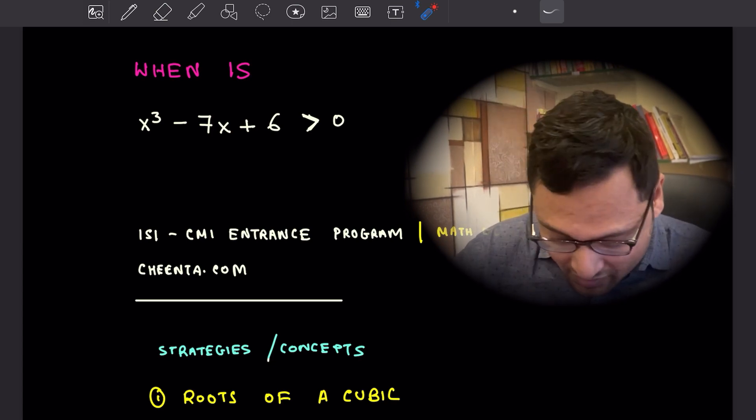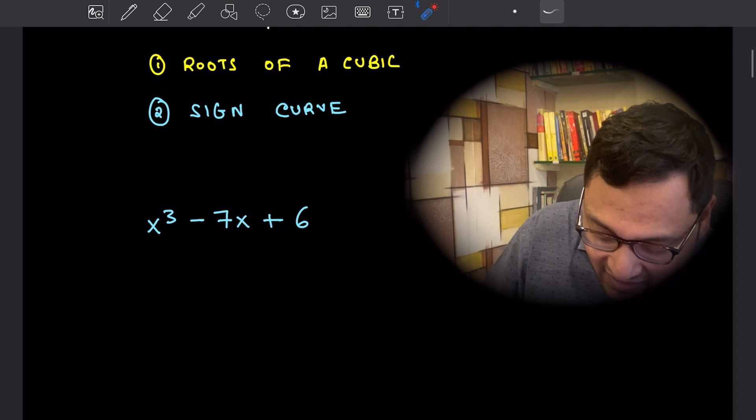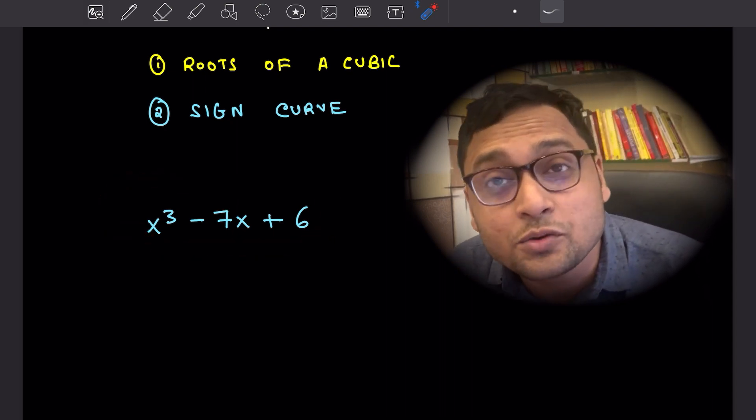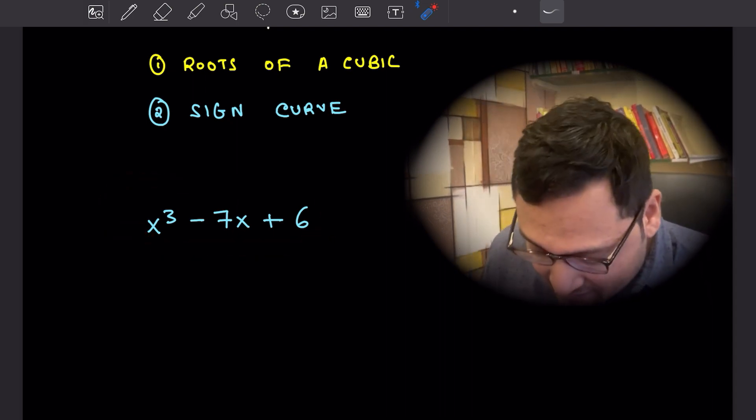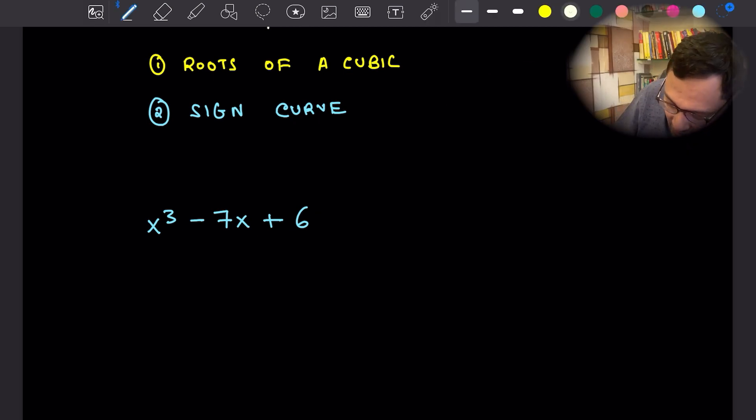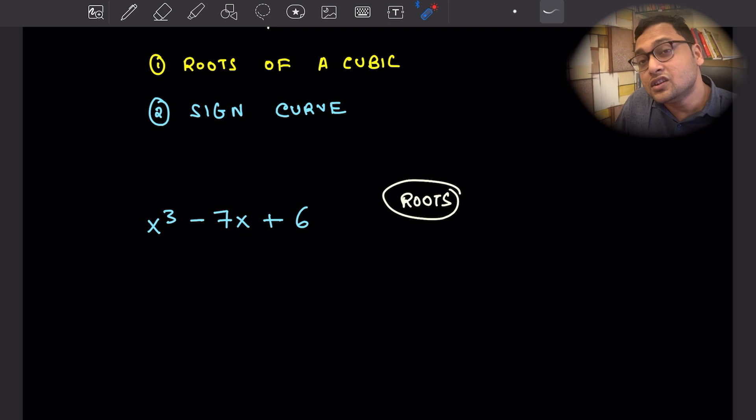Let's get started with this problem and analyze this expression x cube minus 7x plus 6. The first thing is you have to find the roots of this expression. We want to know when is this greater than 0. To know that, we will first need to figure out when is it equal to 0.